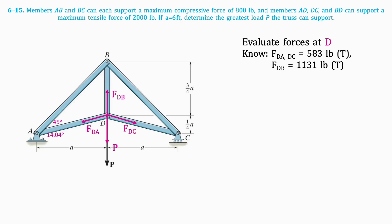Finally, we'll evaluate the forces at joint D. From our previous calculations, we've found that FDA is 583 pounds in tension, and by symmetry, FDC must be as well. We also know the tension force of FBD that we just found.